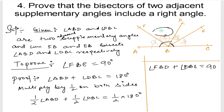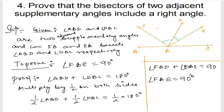Let me show you clearly once more. So angle FBD and angle DBE together form angle FBE. Therefore, angle FBE is equal to 90 degrees. I need to prove that FBE is equal to 90 degrees — hence proved. That's all. I hope I haven't made anything complicated here. If you find any problem, please do write in the comment below. Thank you so much. We will meet in the next video.